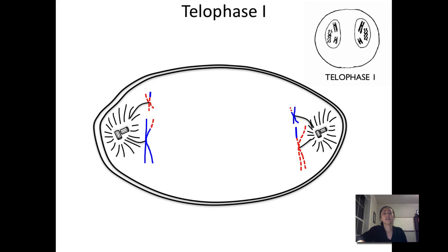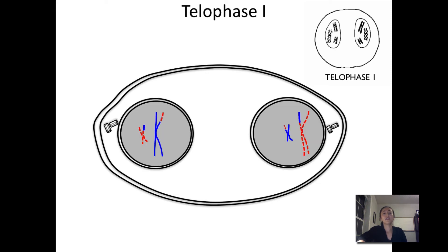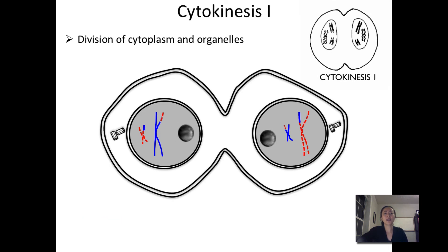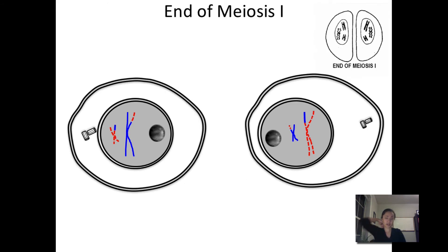During telophase 1, a nucleus forms around each of the haploid sets of chromosomes, so now each nucleus has two chromosomes. This is followed by cytokinesis 1 — division of the cytoplasm and organelles — and at the end of meiosis 1 we have two haploid cells. Our chromosome reduction is complete.